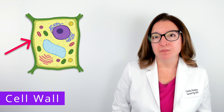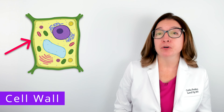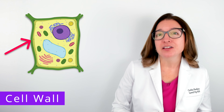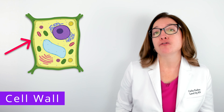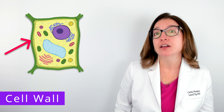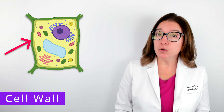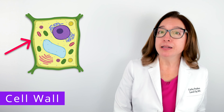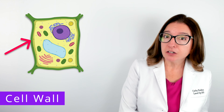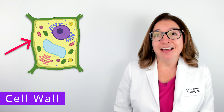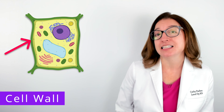Working our way outside the plasma membrane now, some eukaryotic cells will have a cell wall, which protects the cell and provides structural support. Animal and protozoan cells do not have a cell wall. However, fungi, algae, and plants do have a cell wall. This cell wall may be composed of a variety of materials. In plants, it is made up of cellulose. In fungi, it is made up of chitin. And in some algae, it may be made up of silica.